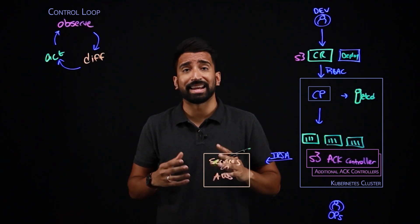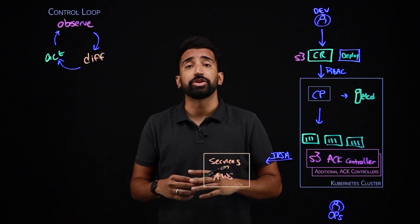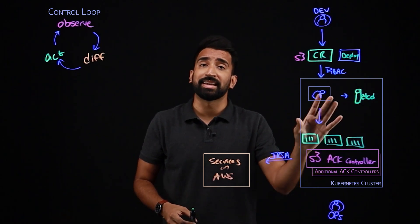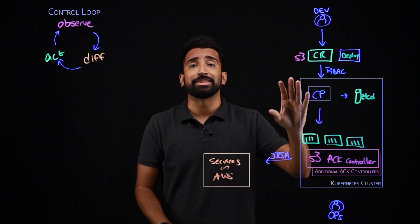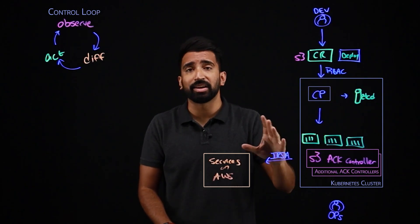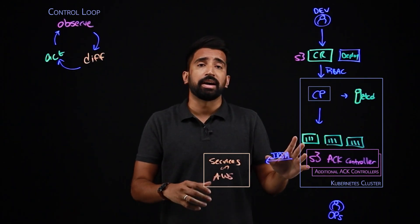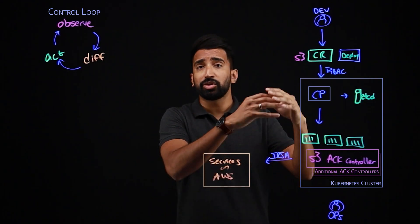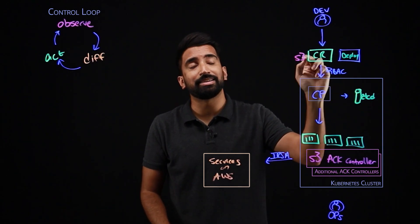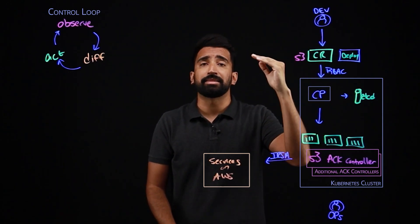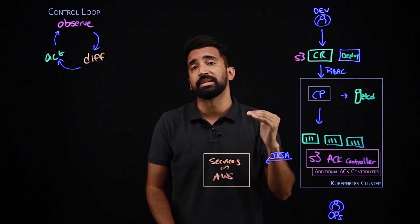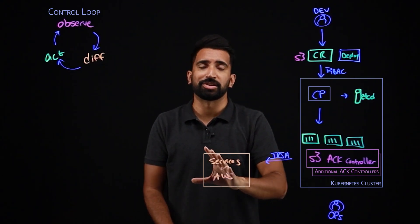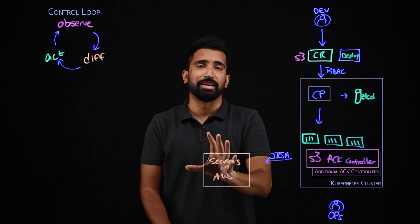Finally, ACK is declarative. You define the desired state and allow the controller to take the necessary steps — whether that's creating a bucket, configuring it, deleting it, or other operations. You're only responsible for defining the desired state, not the imperative list of steps it takes to create a bucket, a Lambda function, or whatever service you might need.